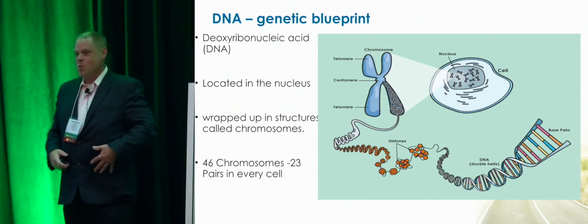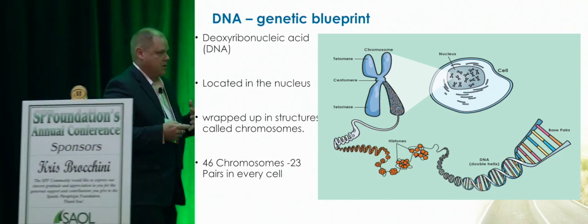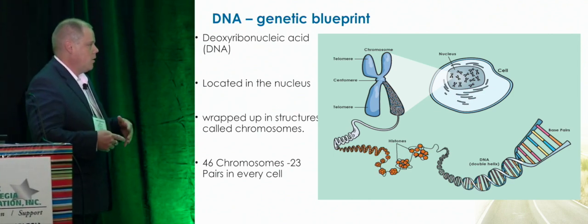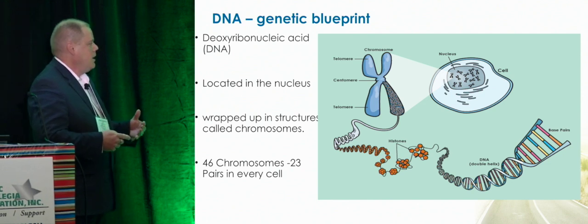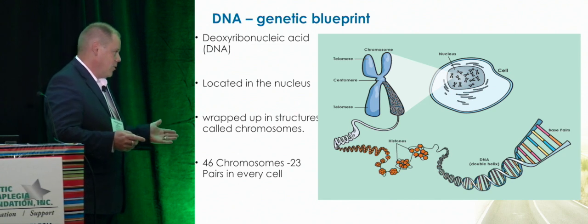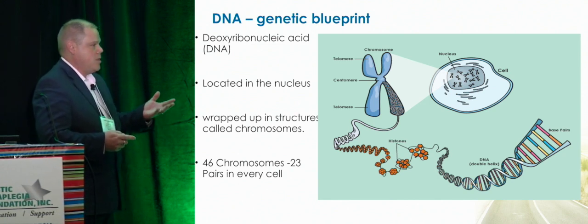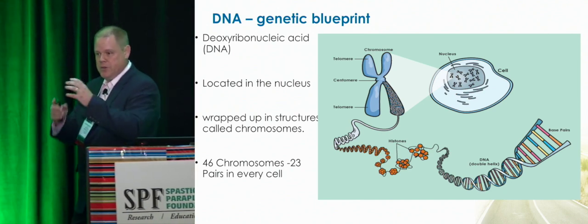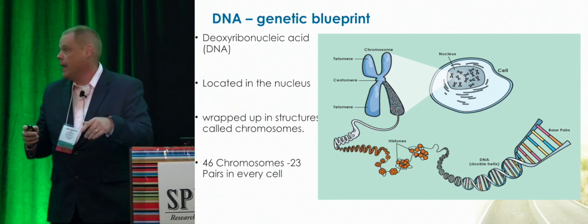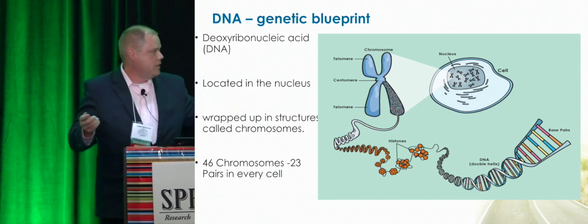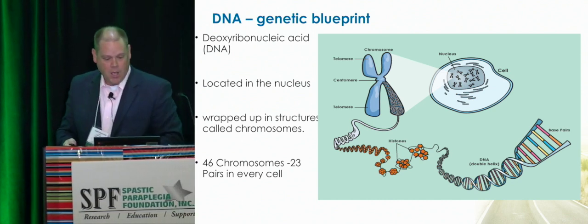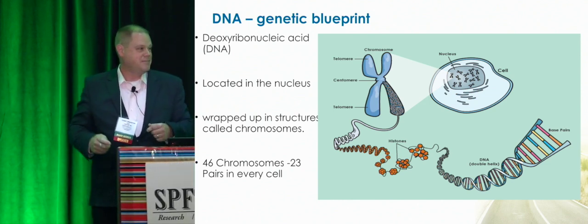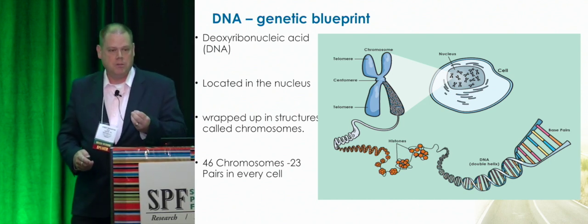How many cells do you think are in your body? Trillions — exactly. Every single one of these cells has DNA within them. DNA is the blueprint; you can make an entire cell from a copy of DNA located in every cell. In biology, 'always' never really means always — for instance, red blood cells don't have a nucleus, but almost every other cell in your body does. Within your DNA, how long do you think DNA is in each cell?